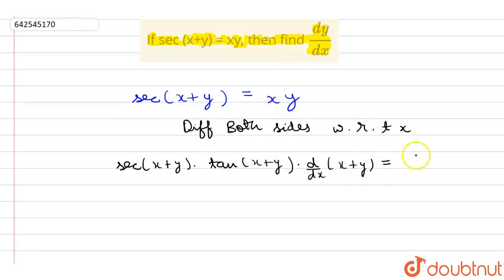Now using the product rule, it will be first differentiation of x, that is 1, times y, plus x times differentiation of y, which is dy by dx.